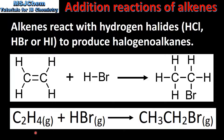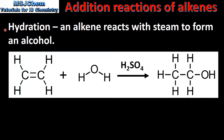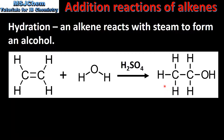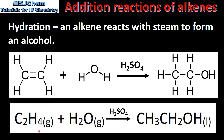The next type of reaction is hydration, in which an alkene reacts with steam to form an alcohol. In this reaction we have ethene reacting with water in the form of steam in the presence of a sulfuric acid catalyst to form ethanol. And here we have the equation for the reaction.